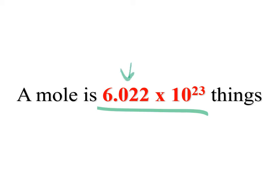I recommend remembering it to four significant digits. That gives you normally enough significant digits to match the precision of molar masses given on the periodic table, so four is a good number — better than three. And 10 to the 23 should be easy to remember. So 6.022 times 10 to the 23 is the amount of things in a mole. A dozen is 12; a mole is 6.022 times 10 to the 23.